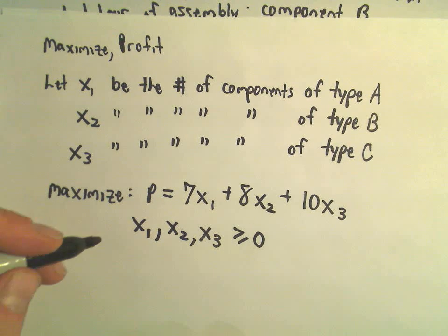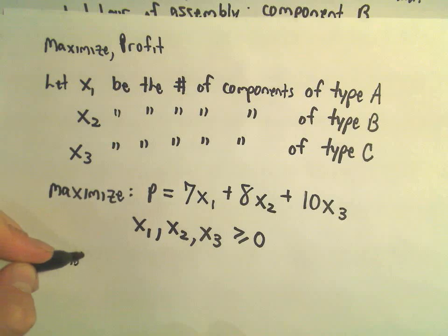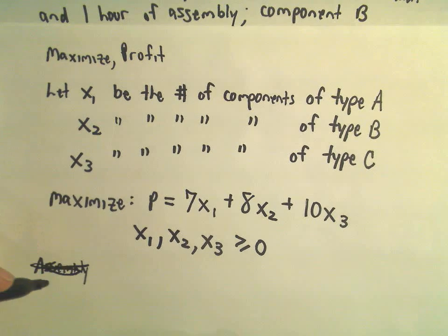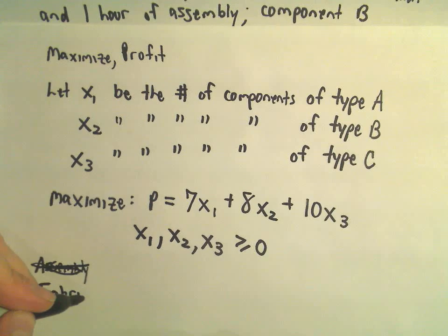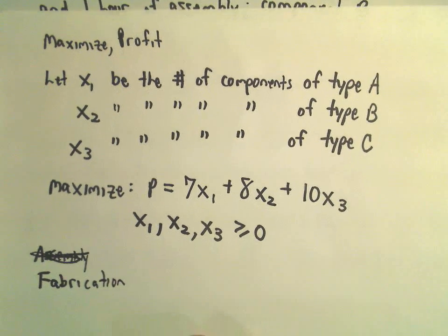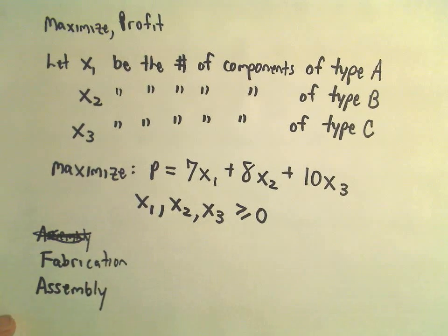Now I'm going to set up some more constraints. I'm going to relate the information about assembly time. Let's do fabrication first and keep it in order. We'll set up an inequality related to fabrication and an inequality related to assembly time.